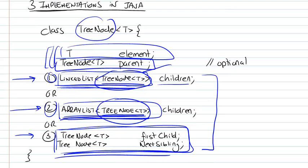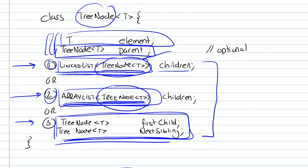So we were looking at the implementations of a tree in Java, and we said that for the list of children, we have the choice between these three possible interpretations or implementations, the first one being a linked list.